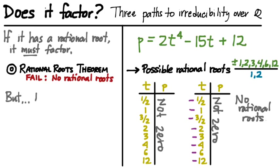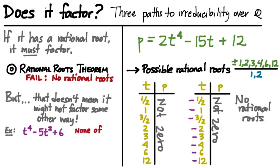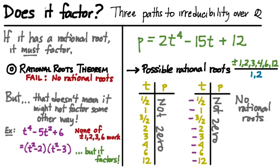But that's not enough. It's not enough just to know that there's no rational root to guarantee that a polynomial is irreducible. Just having no rational root might still mean that it factors in some other way. The prime example is something like t to the fourth minus 5t squared plus 6 — it doesn't have a rational root, but a little inspection shows we can factor it as a quadratic in t squared.